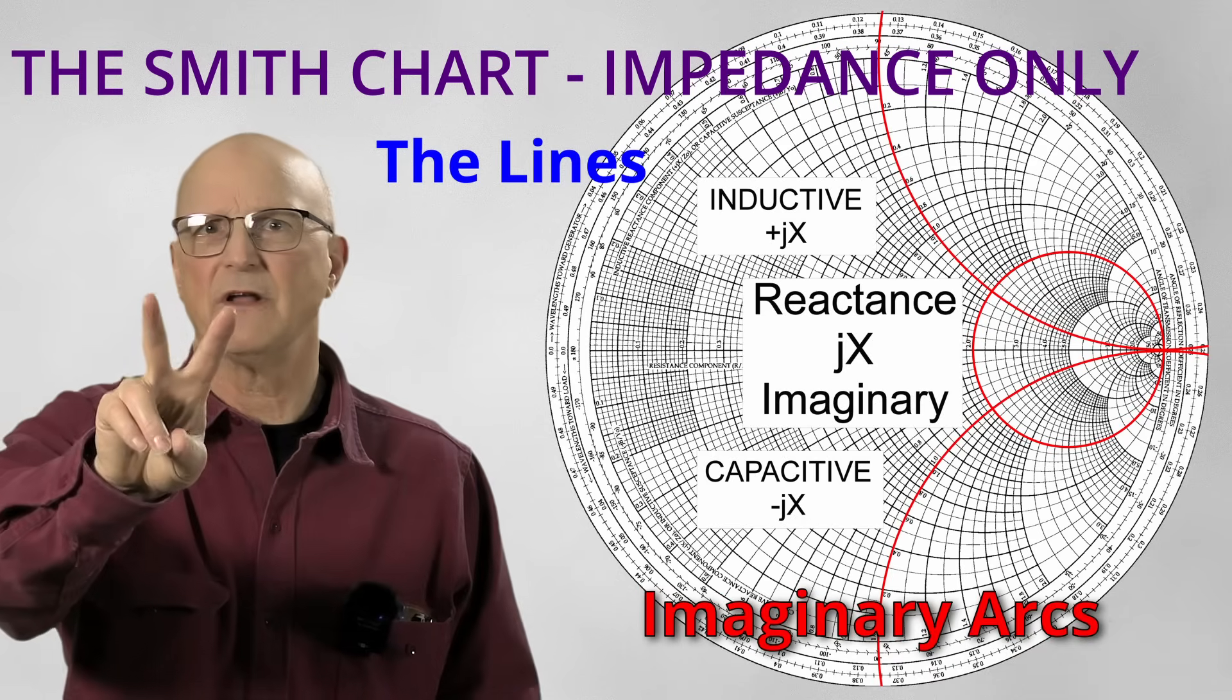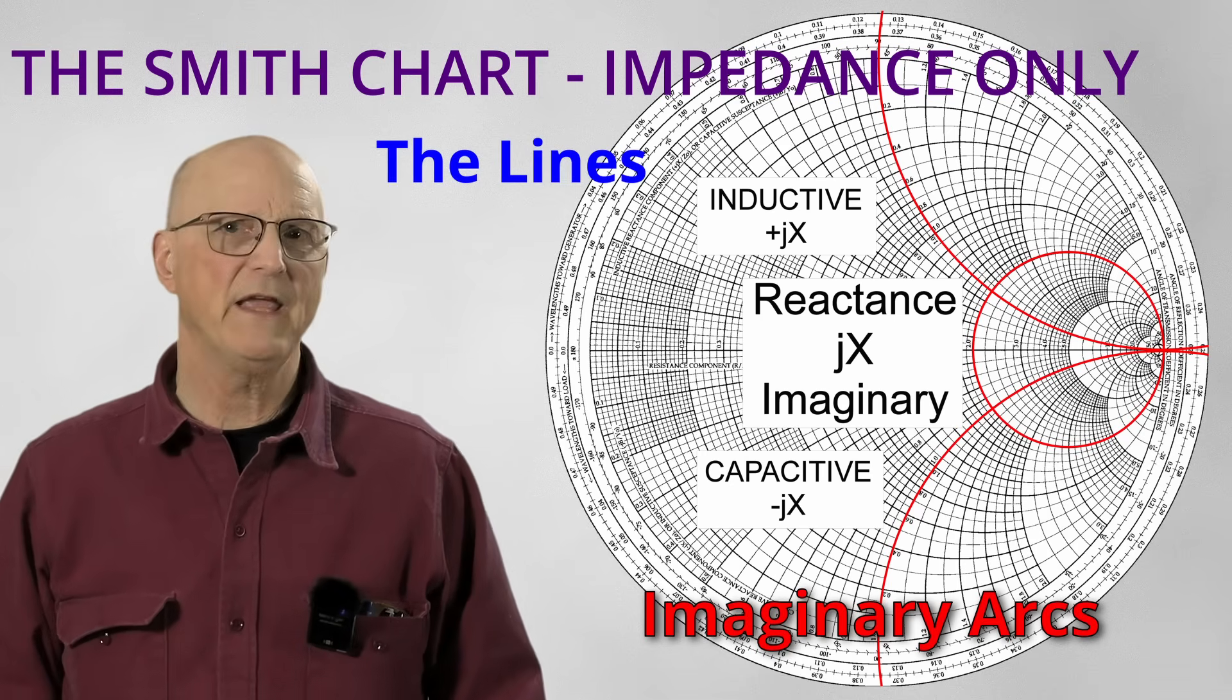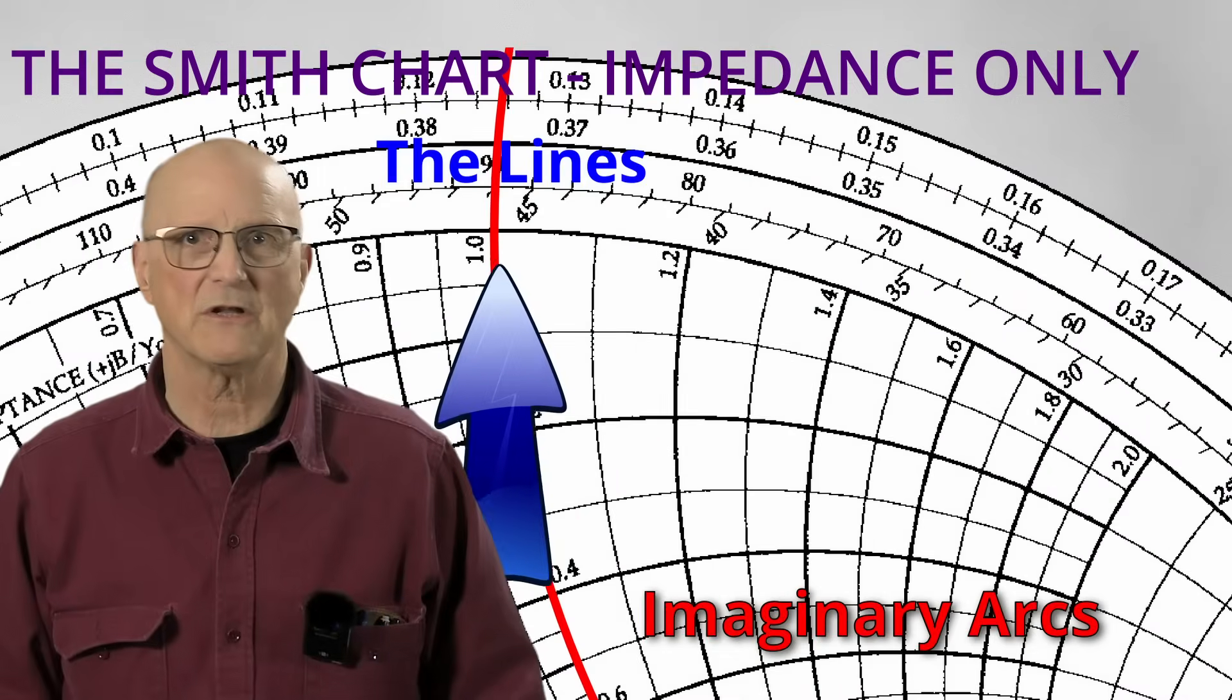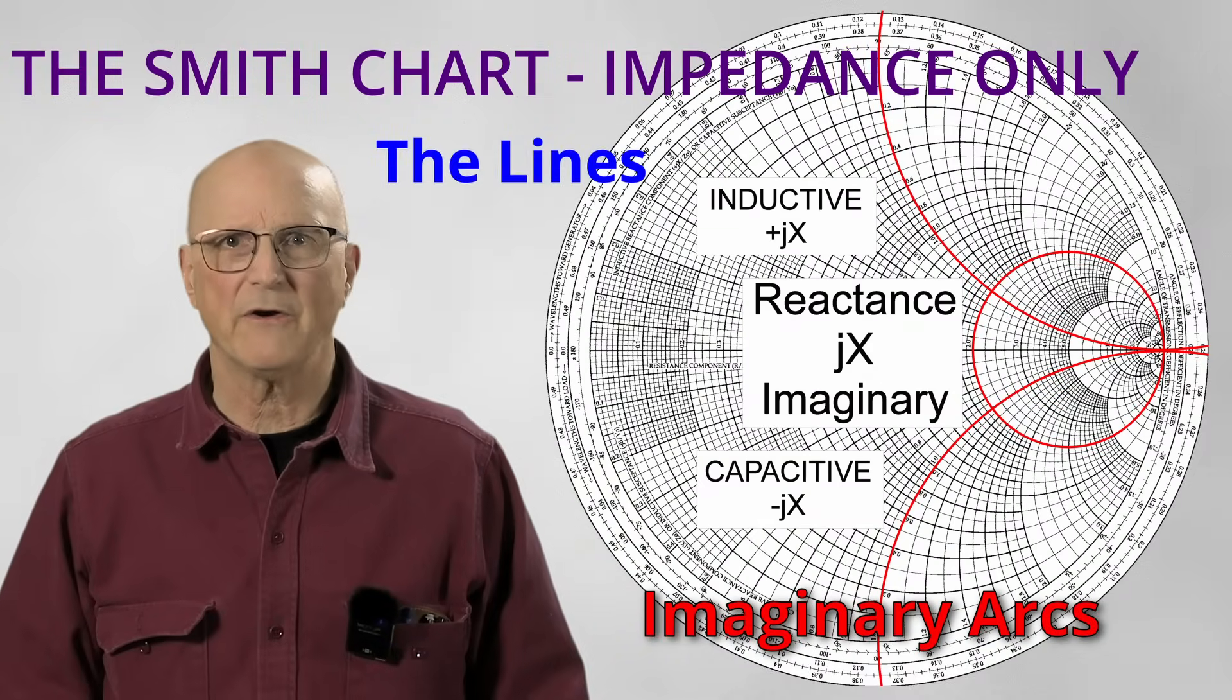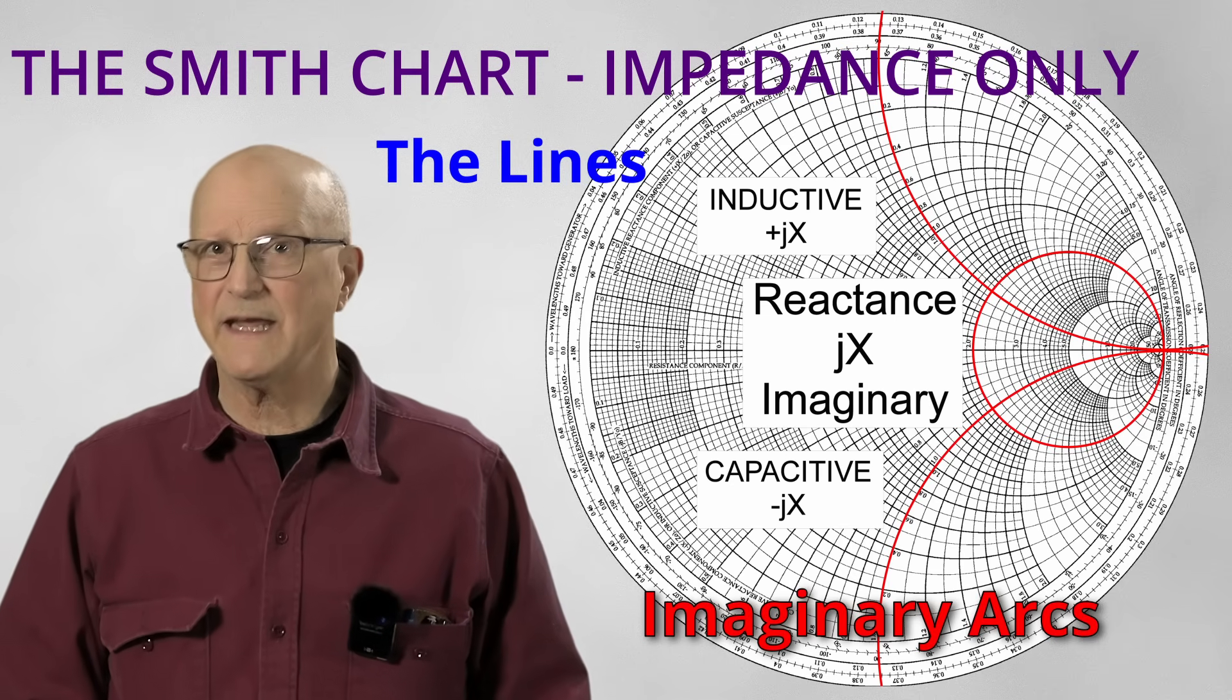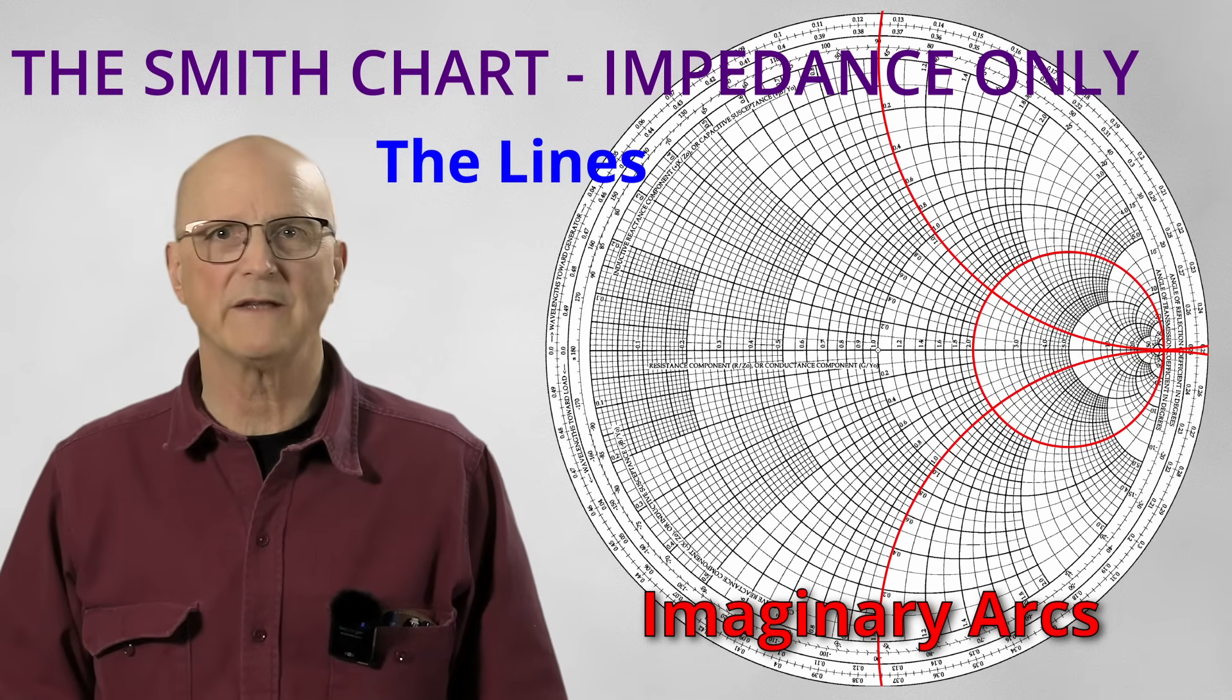The real part of our example impedance will be plotted on the 2.0 circle as shown here. The second set of lines are actually arcs, which are part of circles whose centers are located off the page. These are the lines for the reactive or imaginary parts of the impedance. You can see their values along the edge of the Smith chart. All of the values above the equator are positive values and inductive reactance. All of the values below the equator are negative values and capacitive.